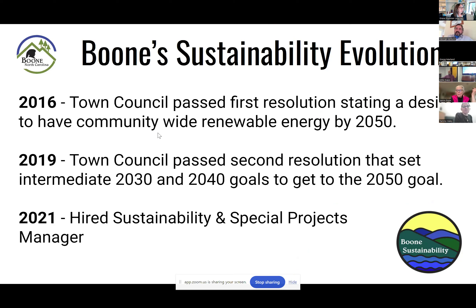A brief history: back in 2016, town council passed its first resolution regarding climate change — a desire to be 100% renewable energy by 2050. To make that commitment in 2016 on that level was bold, with a 34-year timeframe. The 2015 Paris climate accord and an election that year also had a lot of influence. The council realized they probably needed intermediate steps to achieve such a bold goal.